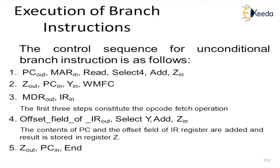Now, the control sequence for an unconditional branch is as follows: PC out — you are getting the data out — comma MAR in, meaning you are putting the data into the memory address register. You need to perform the read operation. You need to select 4, then Add, and then you need to store all of these into Z in. Z may be a variable, and 'in' means you are pushing the contents into Z.